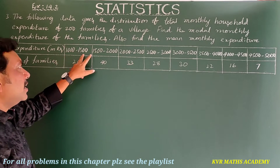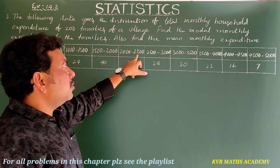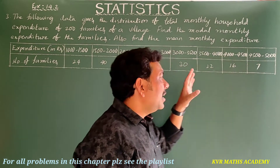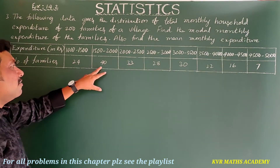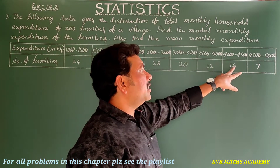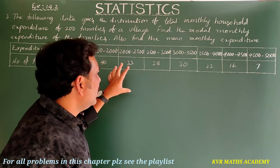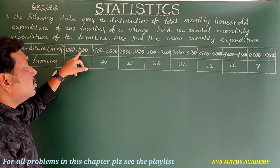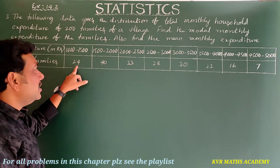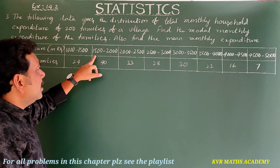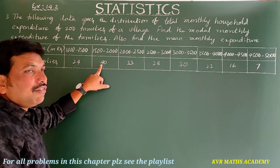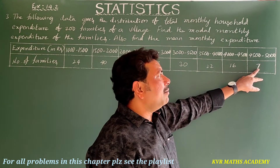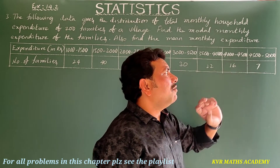The expenditure ranges are: 1000–1500, 1500–2000, 2000–2500, and so on up to 4500–5000. The corresponding number of families are 24, 40, 33, 28, 30, 22, 16, and 7. So 24 families have expenditure 1000–1500 per month, 40 families have 1500–2000, and 7 families have 4500–5000.